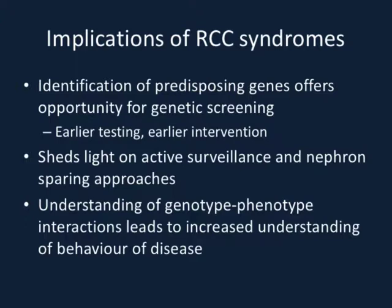The implications of RCC syndromes and hereditary RCC are far-reaching. Clinically, it provides an opportunity to identify the predisposing gene and offer genetic screening for other family members, leading to earlier testing and potentially earlier intervention — with the goal of preventing metastasis and preventing end-stage renal disease and the need for dialysis through nephron-sparing approaches. It sheds light on active surveillance, and I'm sure Dr. Linehan's team will discuss their pioneering work on waiting until 3 centimetres before intervening for hereditary RCCs. Finally, understanding genotype-phenotype implications leads to increased understanding of what drives disease and potential therapeutic targets.